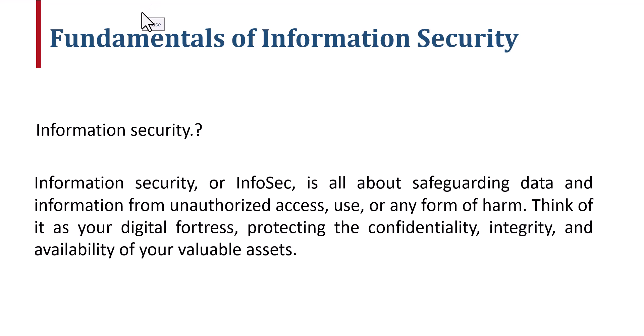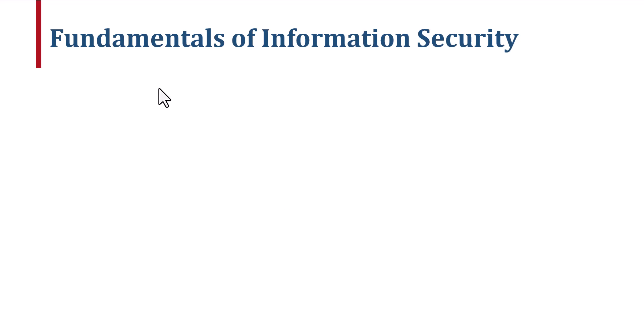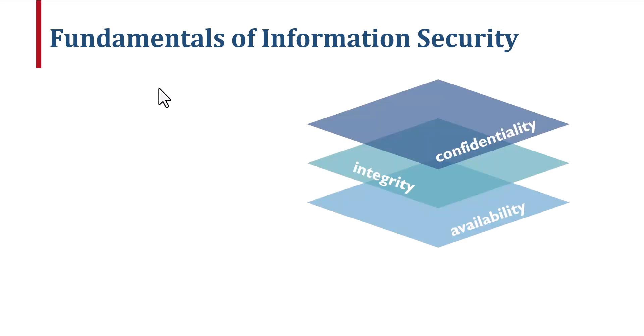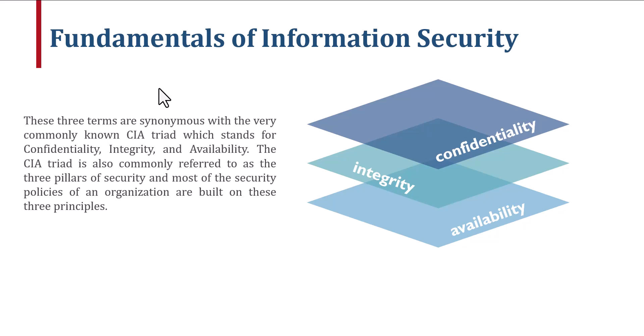To better grasp the concept, let's break down these three pillars of information security. These three terms are synonymous with the very commonly known CIA triad, which stands for confidentiality, integrity, and availability. The CIA triad is also commonly referred to as the three pillars of security, and most of the security policies of an organization are built on these three principles.